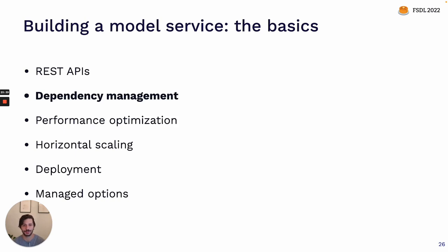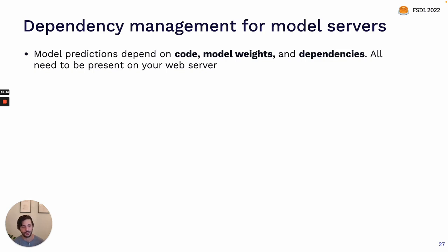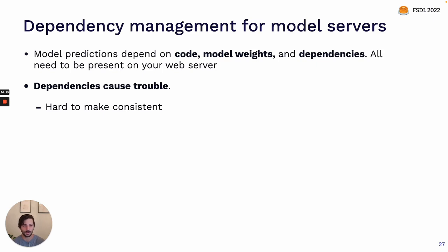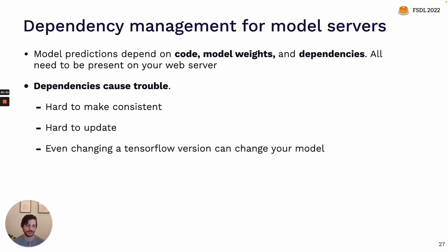The next topic is dependency management. Model predictions depend not only on the weights of the model but also on the code used to turn those weights into a prediction — including things like preprocessing and the specific library versions you need. In order for your model to make a correct prediction, all of these dependencies need to be present on your web server. Dependencies are a notorious cause of trouble in web applications and particularly in machine learning services. They're very hard to make consistent between your development environment and your server — ensuring the server is running the exact same version of TensorFlow, PyTorch, scikit-learn, NumPy, and other libraries as your Jupyter notebook was when you trained those models.